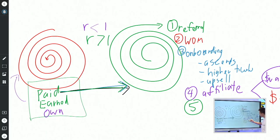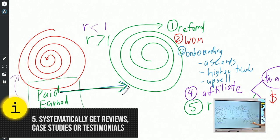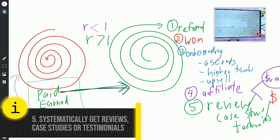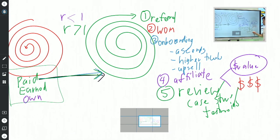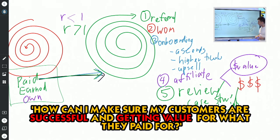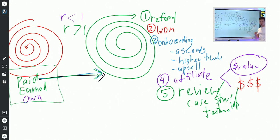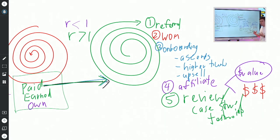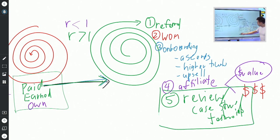Number five is thinking about how you can systematically get reviews, case studies, or testimonials. To fuel this, think about how you can make sure your customers are successful and getting more value than what they paid for. Because if you can do that, that's when you'll get reviews — whether through your Facebook page, a third-party platform, video submissions, Google, or Yelp. As part of your follow-up process after somebody buys, you want to be able to utilize them willingly submitting these reviews.